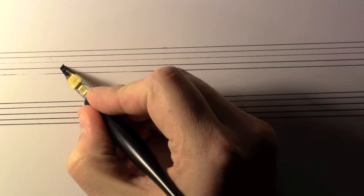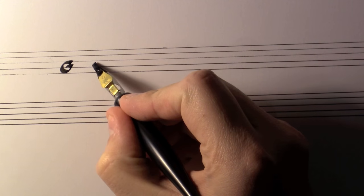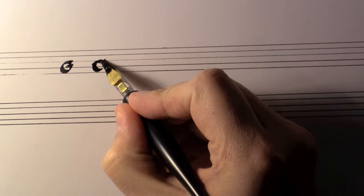The staff later expands to include five lines and four spaces, and more clef markings are introduced to show musicians which notes are represented on the staff.